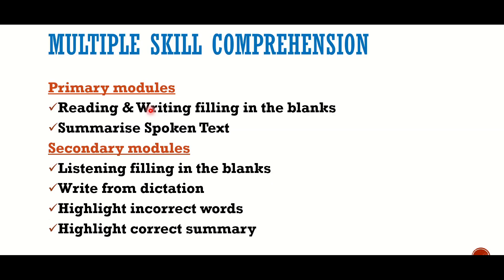If your multiple skill comprehension profile is low, focus on both primary and secondary modules. For reading and writing fill in the blanks, strengthen your spelling. For summarize spoken text, your writing skill and spelling should be confident. For listening fill in the blanks and write from dictation, your listening skill and spelling should be strong. Highlight incorrect words contributes to listening, while highlight correct summary is not important.